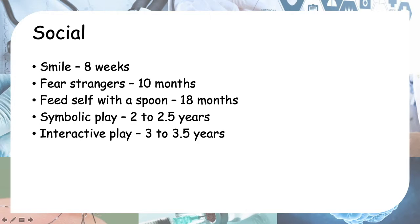Smiling is reached at a very young age — by 8 weeks. Fear of strangers means the child shows discomfort or cries around strangers. Feeding self with a spoon is self-explanatory. Symbolic play is when they play with dolls that have a character, play cooking, or pretend to be a housewife — known as 'main masak masak' in Malay. Playing house, or with cars and planes, are all examples of symbolic play.